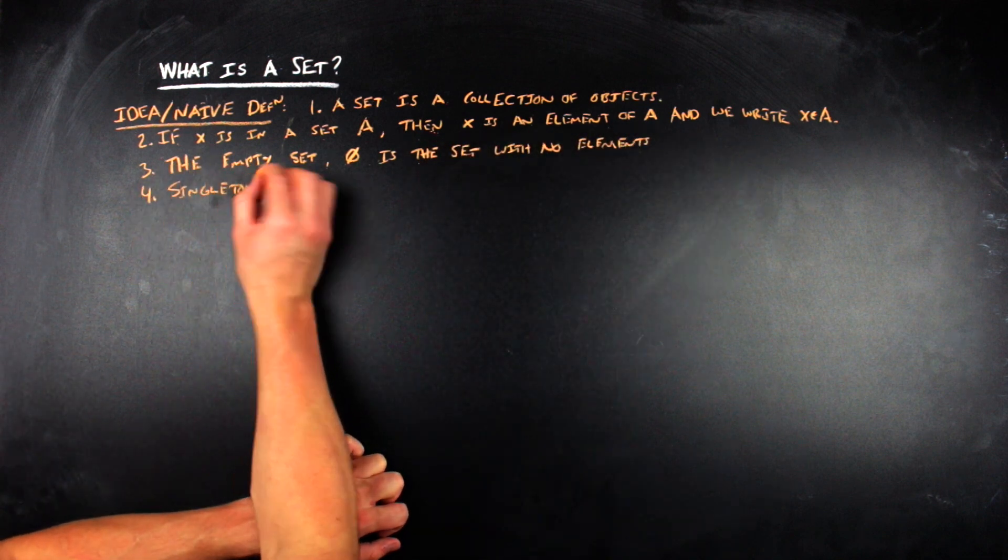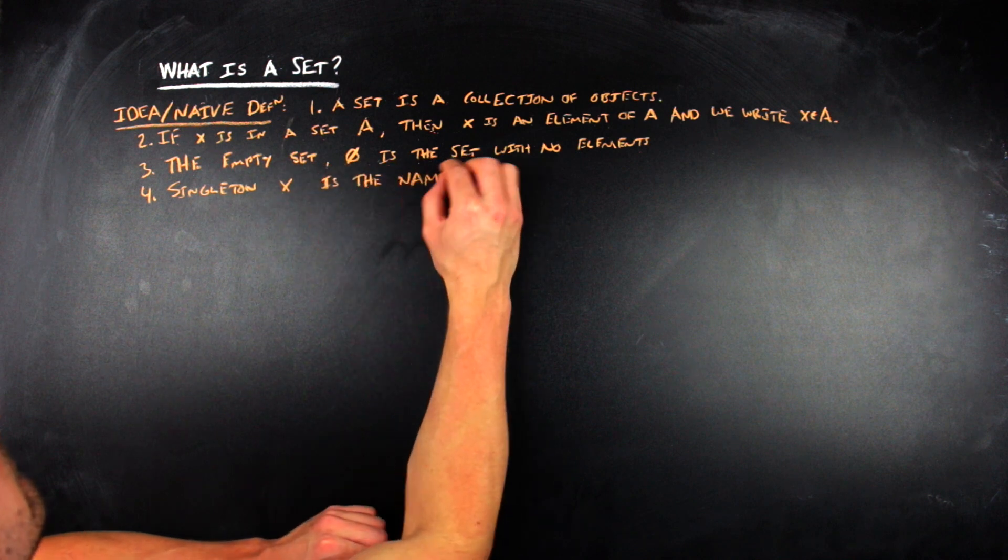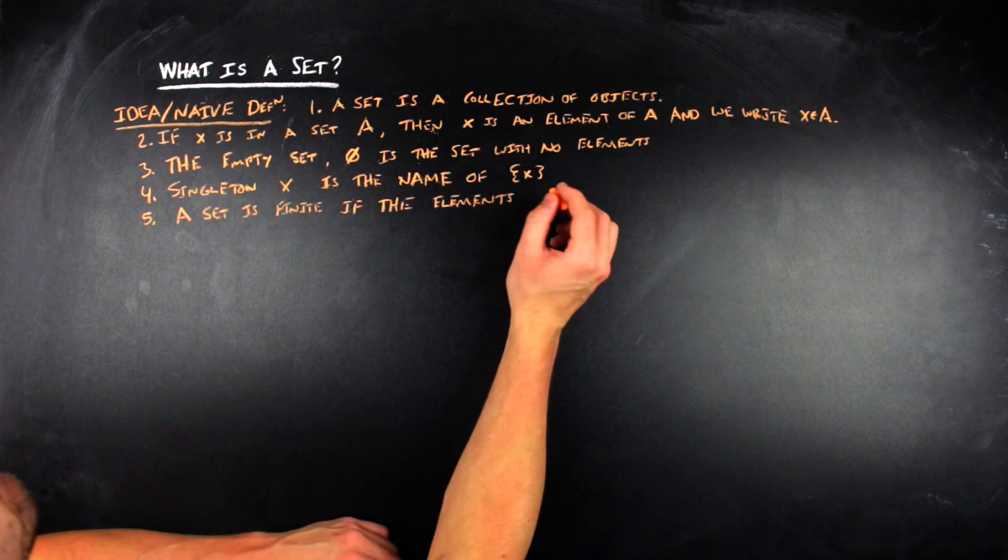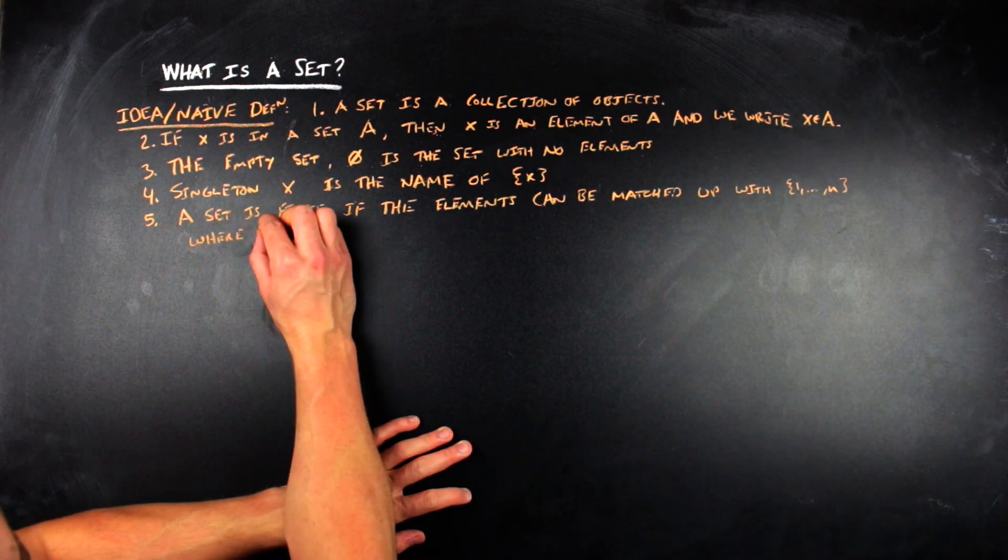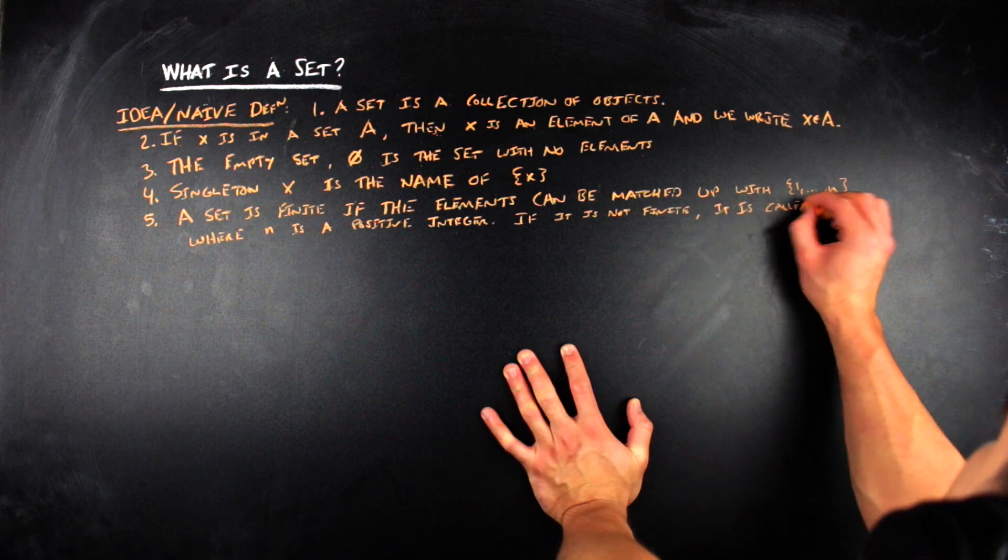Singleton x is the name of the set that just contains x, and then the last thing that goes into this naive idea of what a set is, is that a set is by definition finite, if it can be matched up exactly from the elements of natural numbers from 1 to some n, where n is a positive integer. And so, that's great, right?